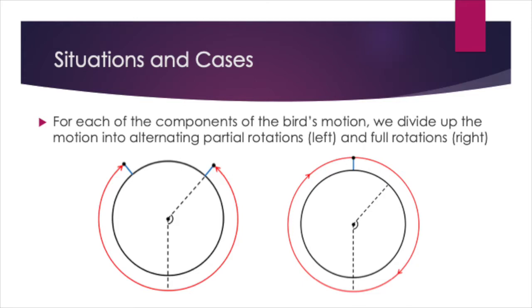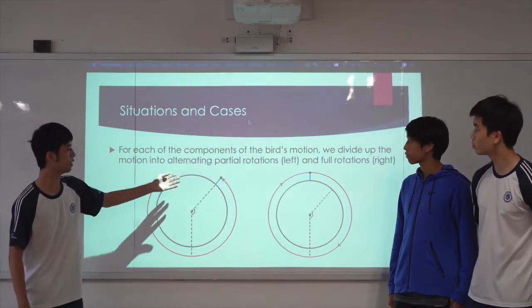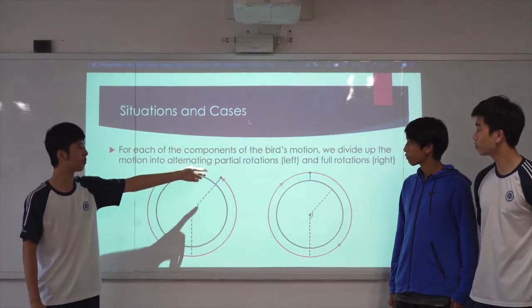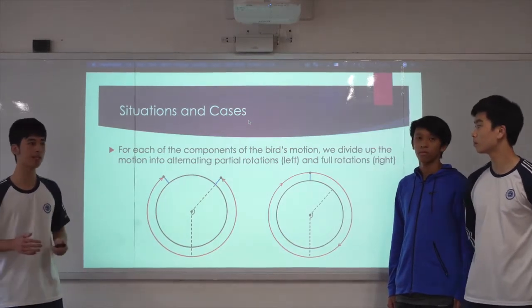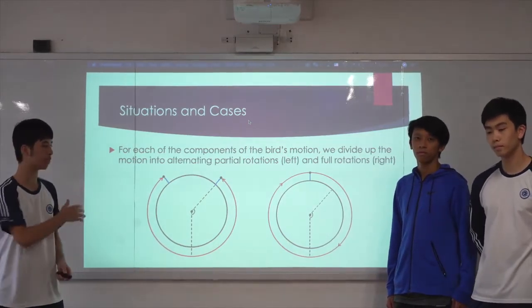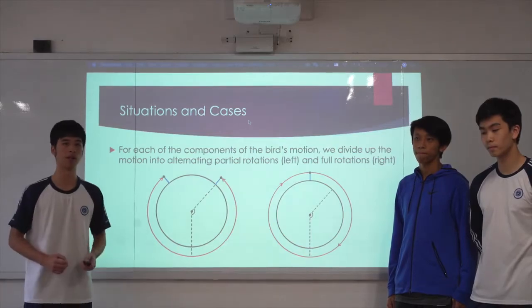For our model, we can divide the trajectory for all categories of motion into either alternating partial rotations or full rotations. We do this because there are slightly different proofs for each of them to find the optimal trajectory.